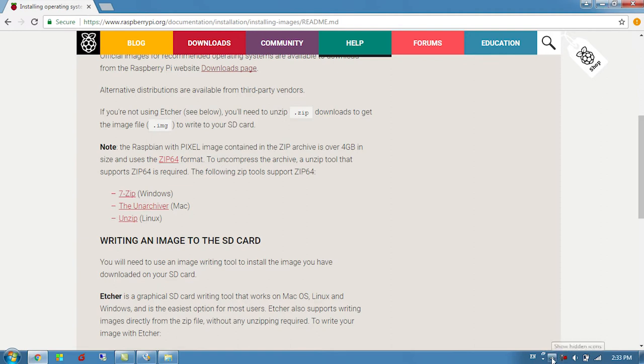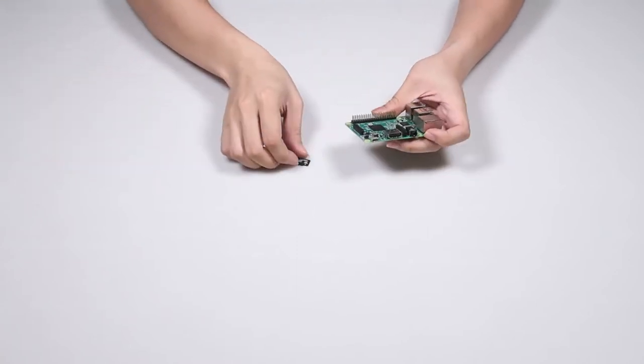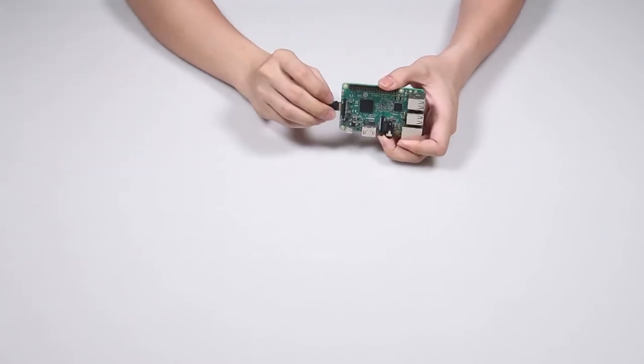After you have finished burning the image, you can unmount the SD card. Eject, then take the SD card from the card reader and plug the SD card into the Raspberry Pi 3.